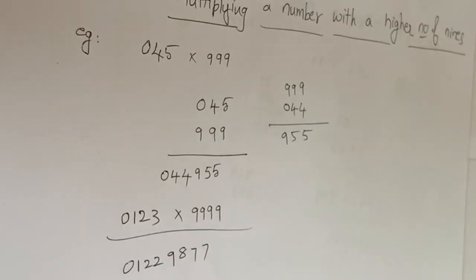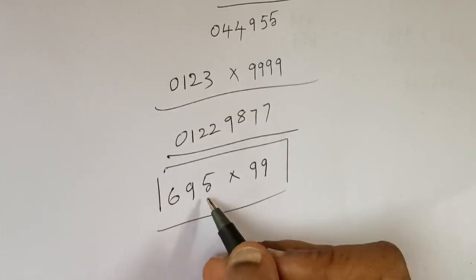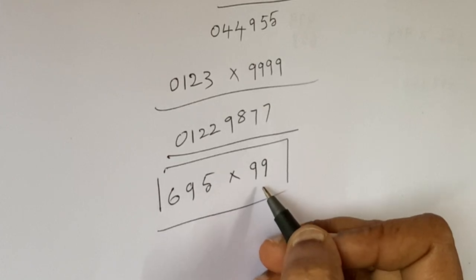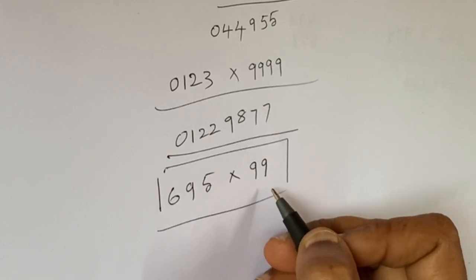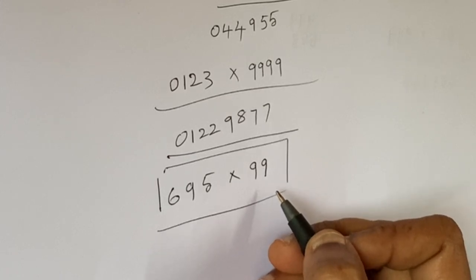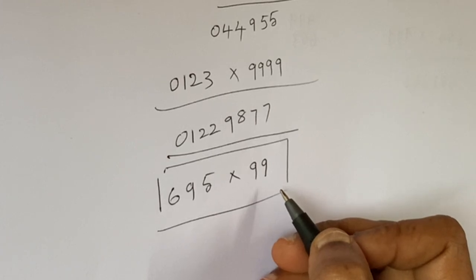You can easily calculate in your mind and tell the answer. What if the multiplicand consists of three digits and the multiplier consists of only two nines? You want to know this procedure? You have to wait until my next video. Until then, happy studying!